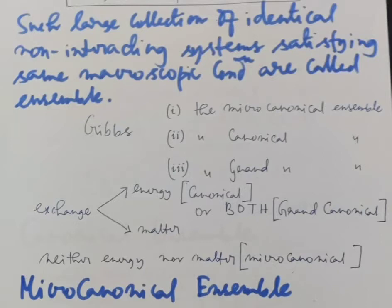It must be noted that in reality one cannot achieve complete isolation of a system. We must allow for some interaction energy delta-E, though very small. The elements of the microcanonical ensemble therefore lie within the range between E and E plus delta-E.